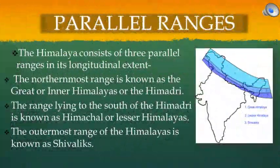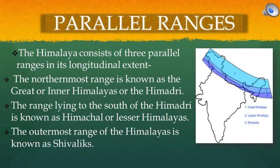The Himalayas consist of three parallel ranges in their longitudinal extent. First, the northernmost range is known as the Great or Inner Himalayas, or the Himadri. Second, the range lying to the south of the Himadri is known as Himachal or Lesser Himalayas. Third, the outermost range of the Himalayas is known as the Shivaliks.